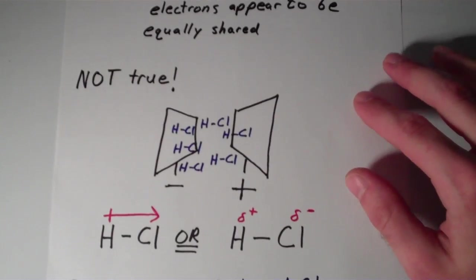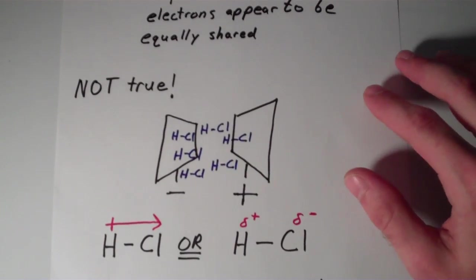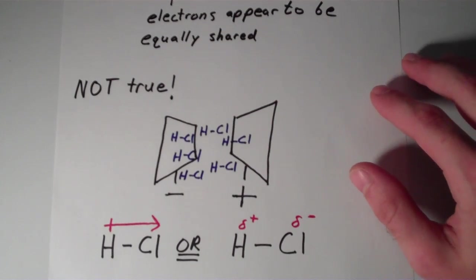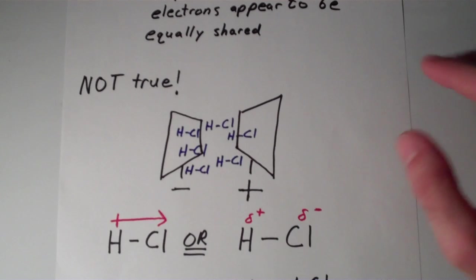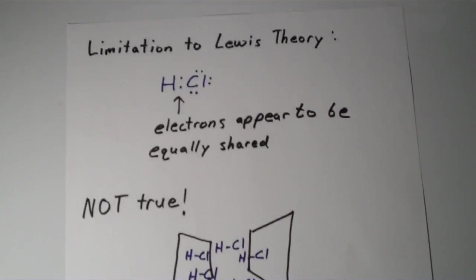We've seen that you can show via experiment that this bond is polarized towards the chlorine, and the chlorine hogs up more of the electron density that is shared between those two atoms. So why is this true? Why are the electrons distributed unevenly?